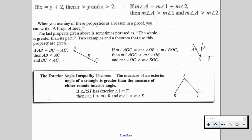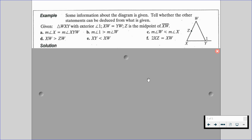Let's go through an example of how we actually see this applied. Some information about the diagram is given; tell whether the other statements can be deduced from what is given. We're given triangle WXY with an exterior angle 1. We're given that the length of XW equals the length of YW, and that Z is the midpoint of segment XW.